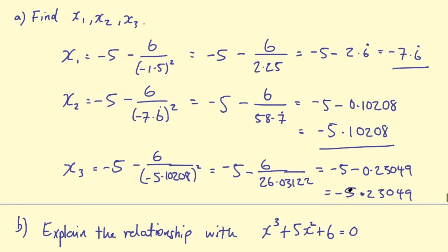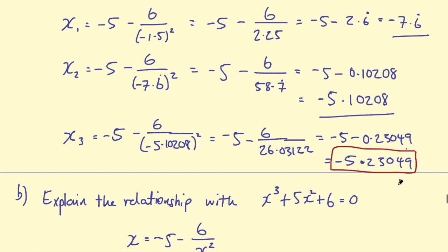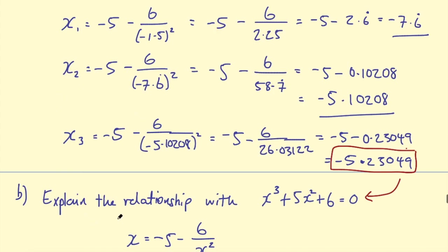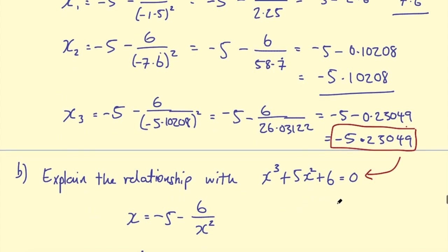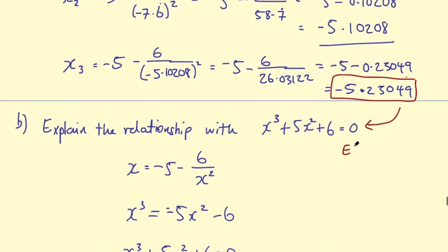What this number is saying is that this might be a solution to this cubic equation here, or it might be close to a solution. If you put that number into this cubic - cube this number, square it, multiply it by 5, then add 6 - you should get close to 0. If it's not 0, then you could keep iterating and it will get closer and closer to 0. So this is, if you like, an estimate of a solution to the cubic equation.